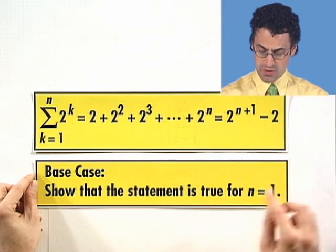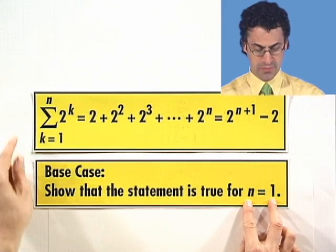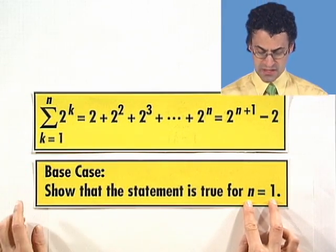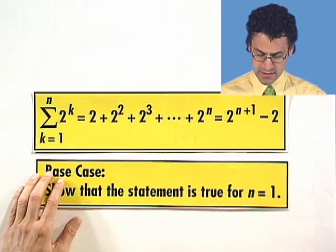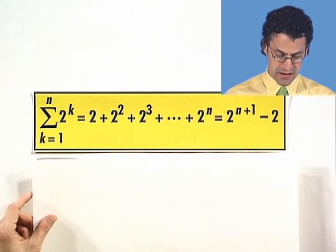So to prove this, what we have to do is show that the first domino falls. That's called the base case. So we want to show that the statement is true when n equals the smallest value possible, which is 1. So let's show that first. So first we verify the base case.